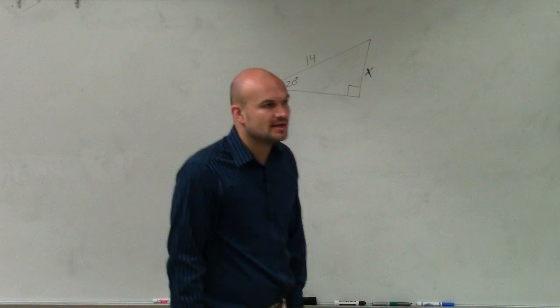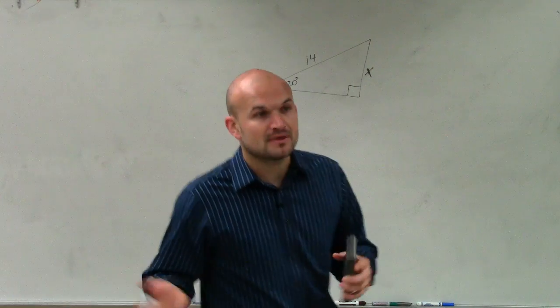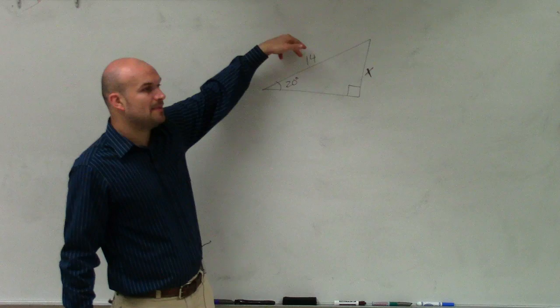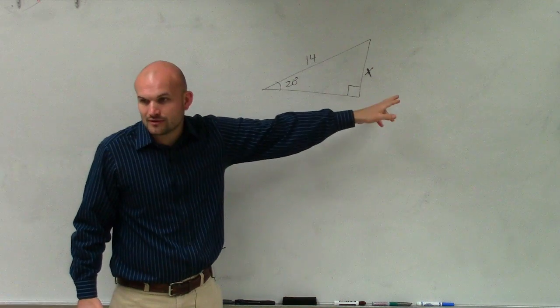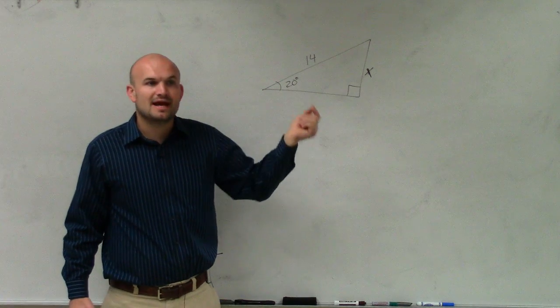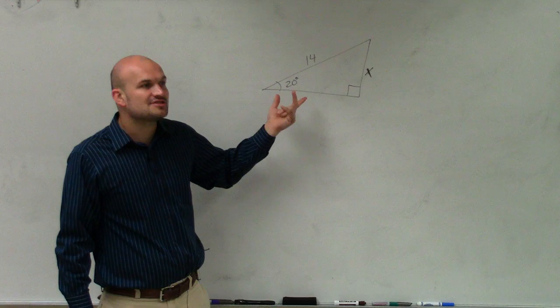Now the next one, AJ, was the special right triangles, which we've been doing the last couple days. Special right triangles only works if here's the hypotenuse, then here's the short leg. But that only works for 45-45-90 triangles and 30-60-90. Is this a 30-60-90? No, because this is 20 degrees.